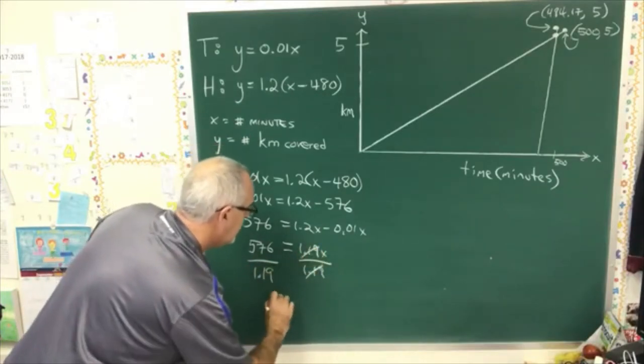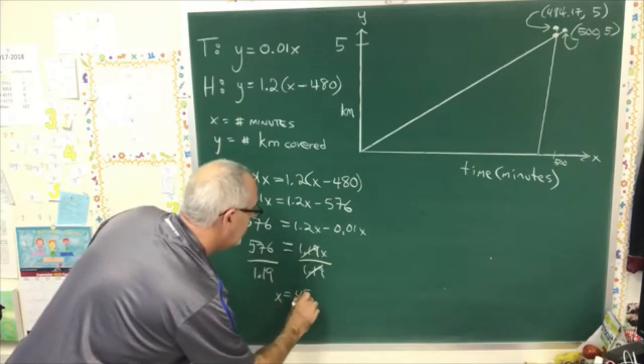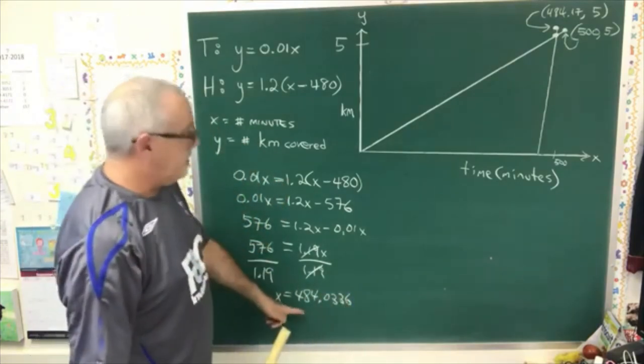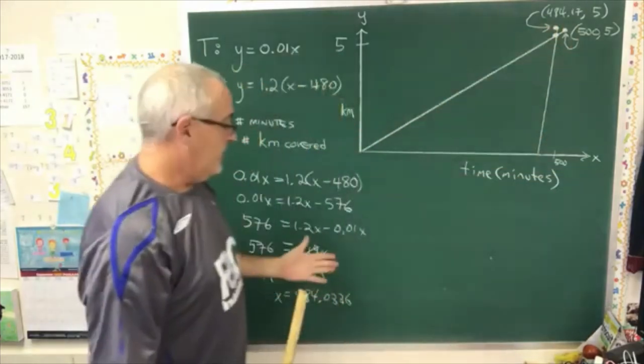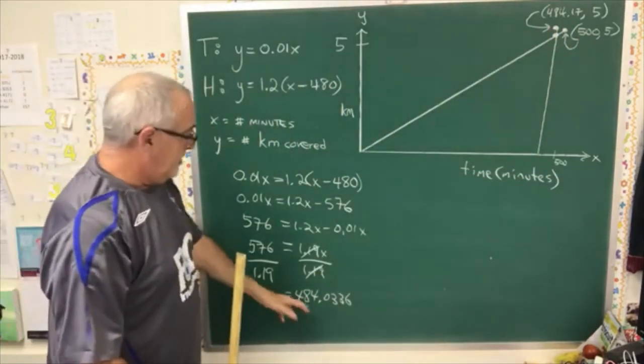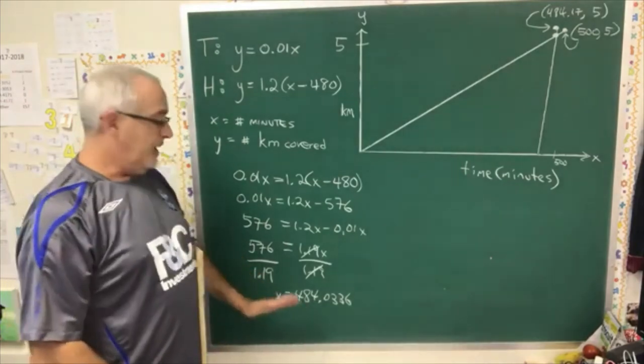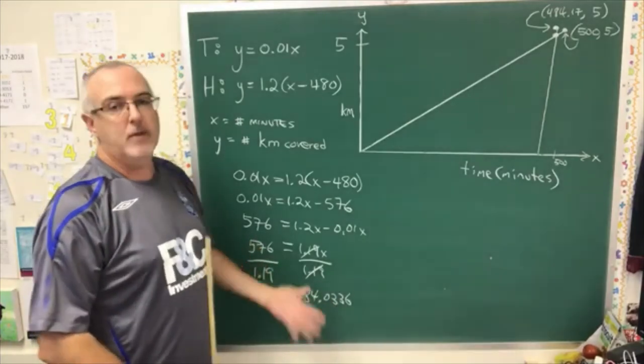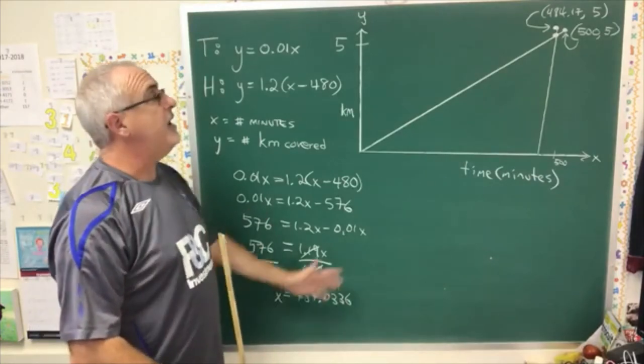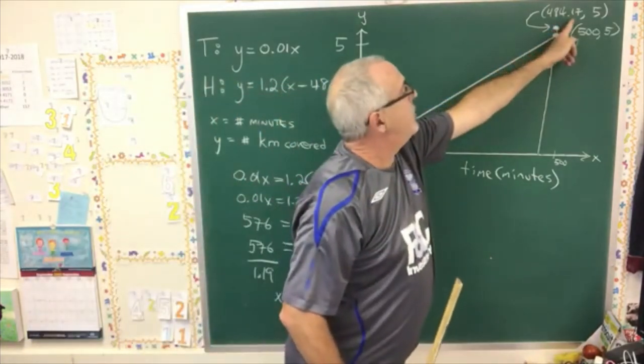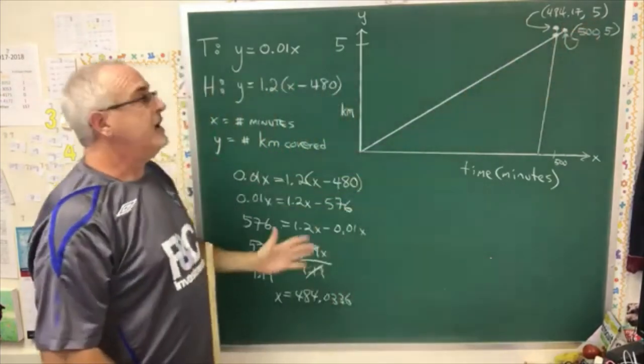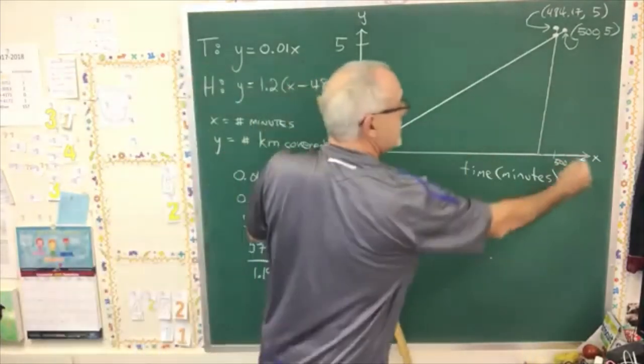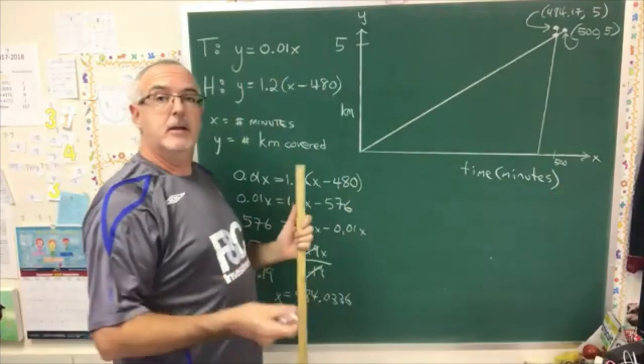These cancel. And x is equal to 484.0336. It's not the same number as the 484.17x, but awfully close. It means from the time that the hare starts, it takes the hare 4.0336 minutes to pass the tortoise, and then another 0.16 or so minutes to actually hit the finish line. And that's very hard to show graphically. And it's because our zeros are stretched so far apart in this situation, because the tortoise is so much slower than the hare.